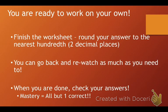You are ready to finish the worksheet. Round your answer to the nearest hundredth. So, two decimal places. Go back and re-watch as much as you need to. When you're done, check your answers. Mastery means all but one correct. Good luck. You can do it.